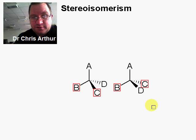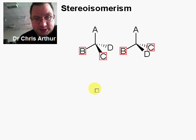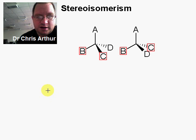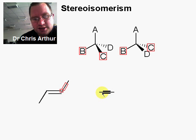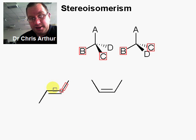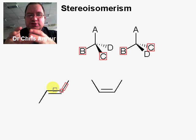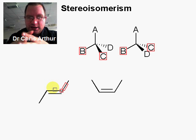You're going to meet Stereoisomerism in two different places. First, where you have an sp3 hybridized carbon with four different groups attached. But you're also going to meet it in terms of Stereoisomerism across a double bond — these two compounds here are different; they have a different three-dimensional arrangement in space.